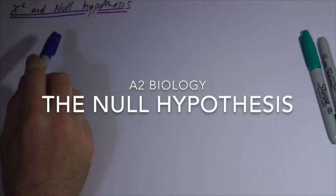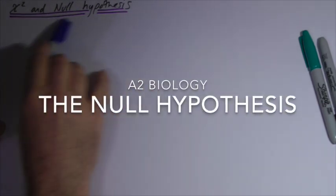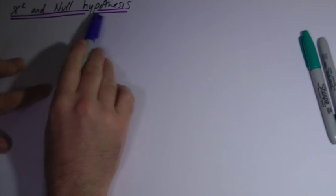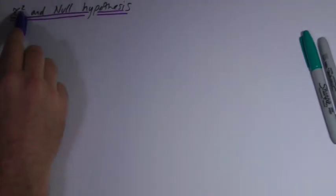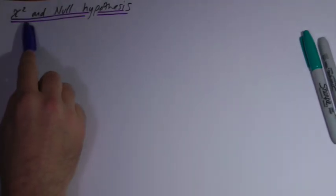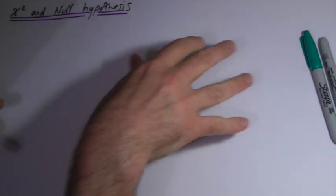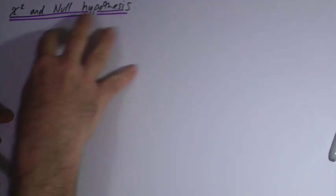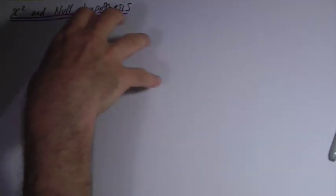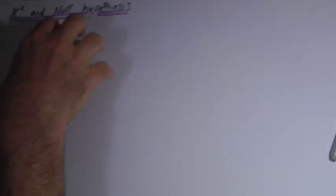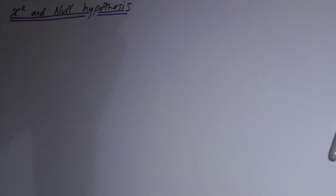This is all about the null hypothesis, which is a bit of a tricky idea to get your head around. It only really comes up when you talk about chi-squared. There's a basic, quick and easy way to understand what's happening, but I want to talk about it to make sense of it, because it is quite an important idea in science.